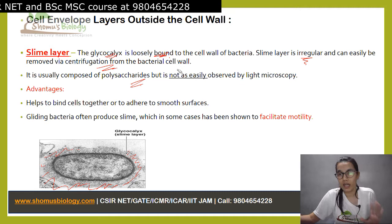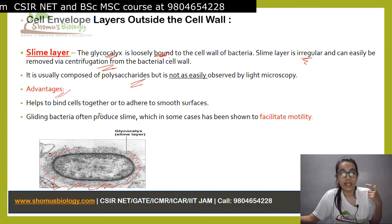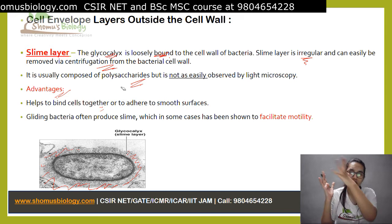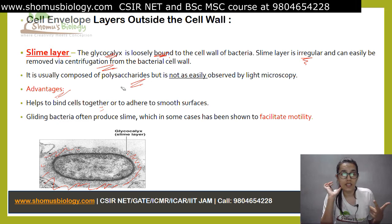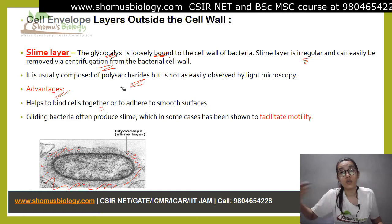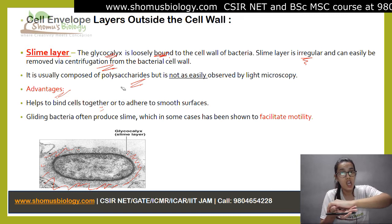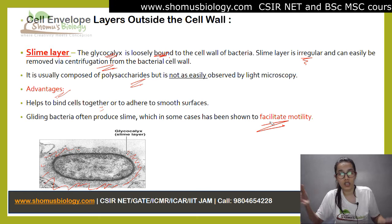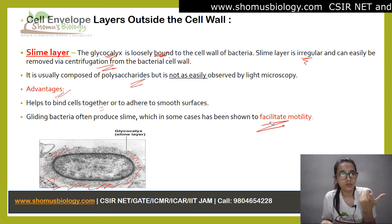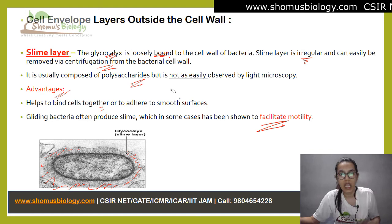As you can see, this is a slime layer — it's not tightly bound and because of that it has an irregular shape. They are also usually composed of polysaccharides, but they are not easily observed in a light microscope. The advantages: they help the cell bind together for adherence. Also, in some bacteria that have a gliding movement, they produce this slime, and because of the slimy nature the bacteria can move — it facilitates motility. It's just like how snails move; the slime layer helps the bacteria in gliding motility.